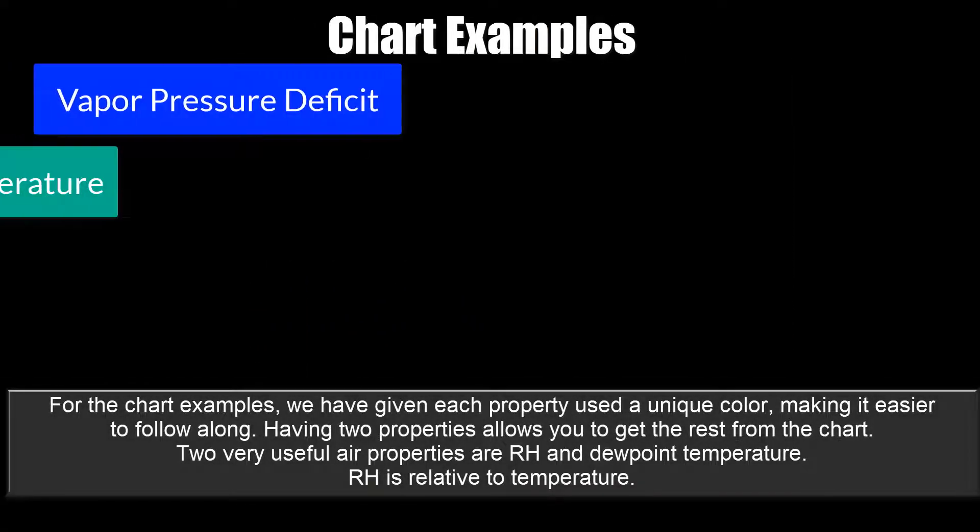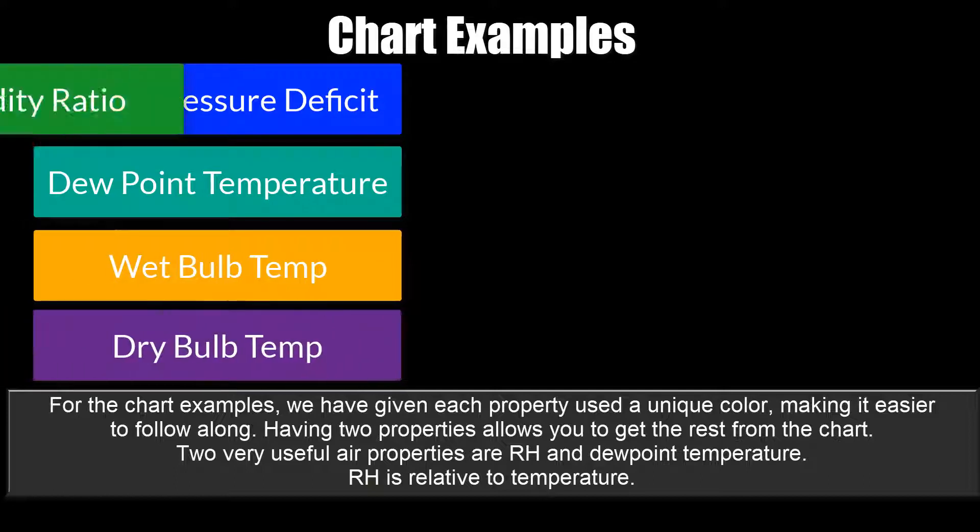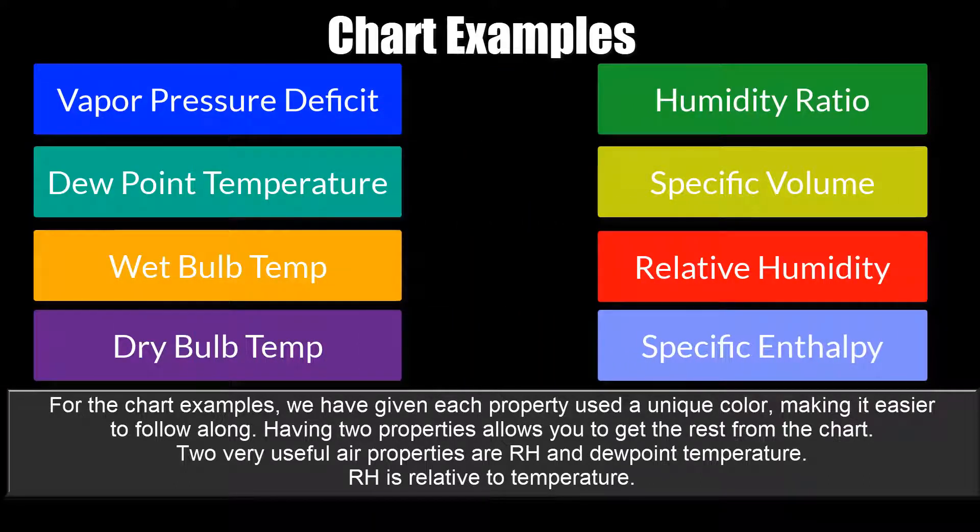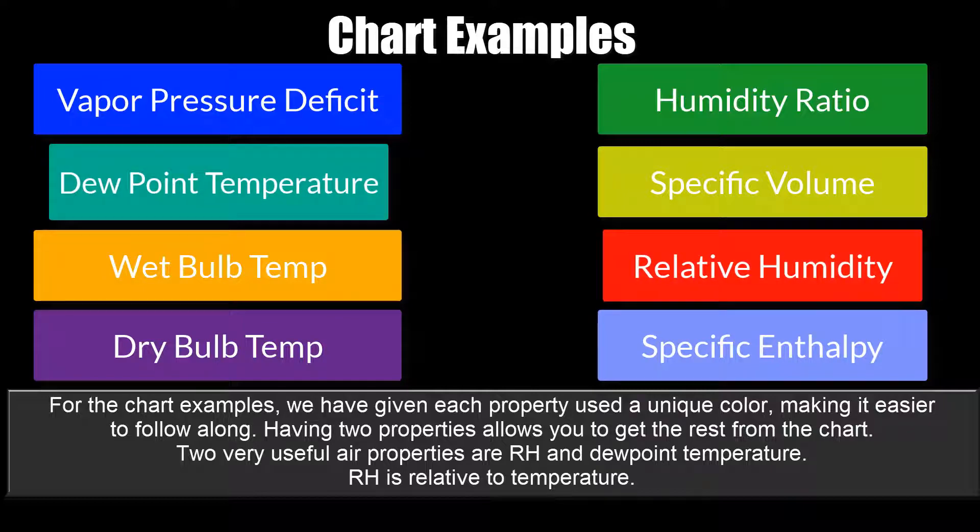For the chart examples, we have given each property used a unique color, making it easier to follow along. Having two properties allows you to get the rest from the chart. Two very useful air properties are relative humidity and dew point temperature.